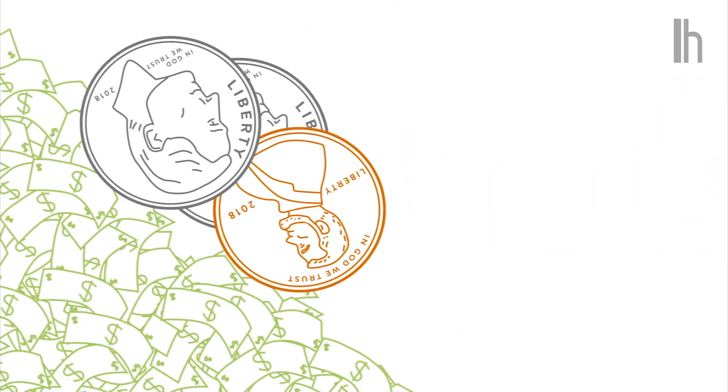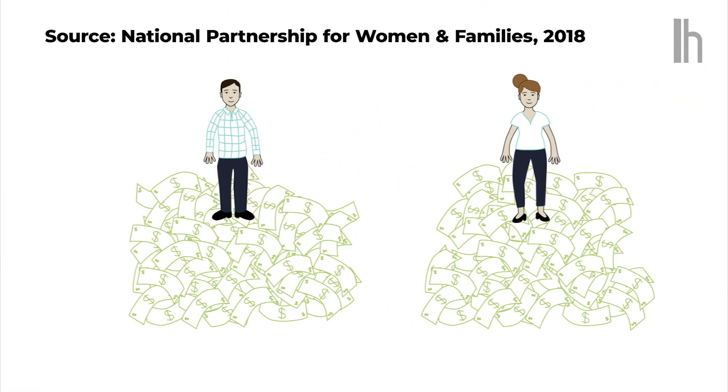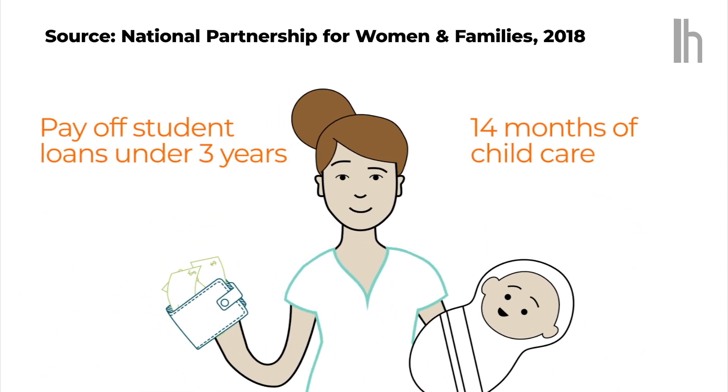So that $0.21 adds up to a lot more. In fact, if the wage gap were evened out, the average working woman would have enough money for 14 more months of childcare, or could pay off her student loan debt in just under three years.